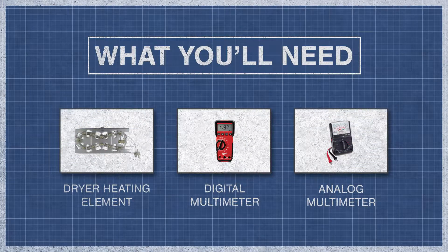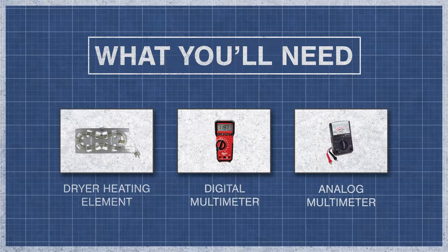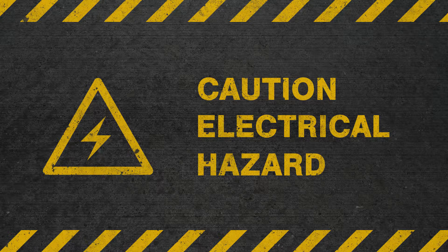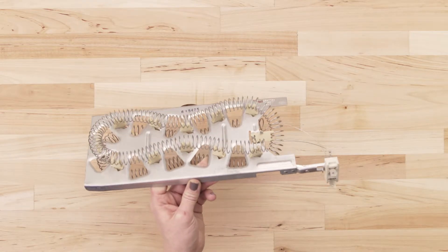All you'll need is your dryer heating element and a digital or analog multimeter. To be safe, turn off the breaker and fully unplug the dryer from the receptacle. Now separate or remove the heating element.